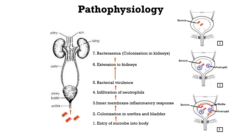Neutrophils infiltrate during that process, which leads to multiplication of bacteria — that is, increased virulence of bacteria. If this infection is not treated, it extends from the bladder into the kidney. The same process of colonization occurs in the kidney, which can also lead to bacterial spread.